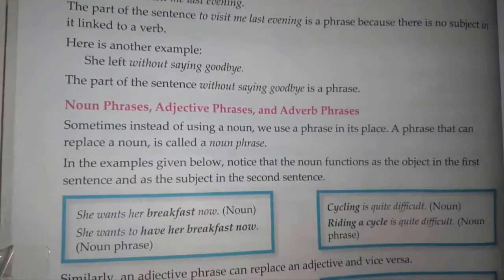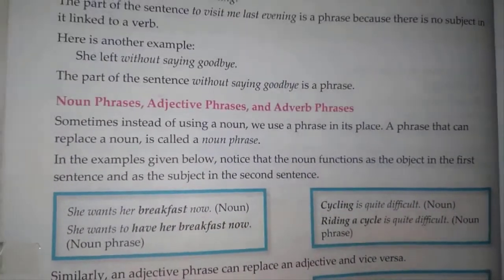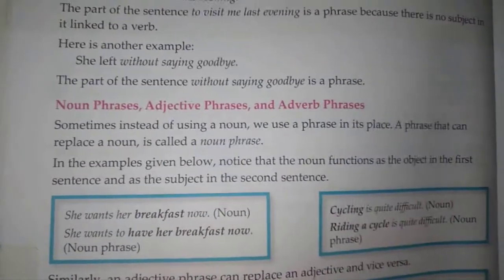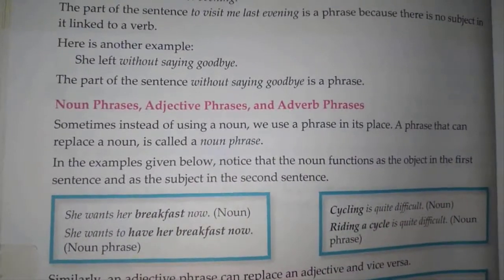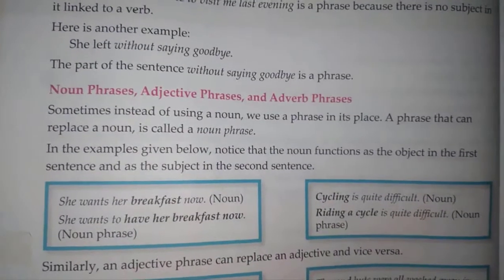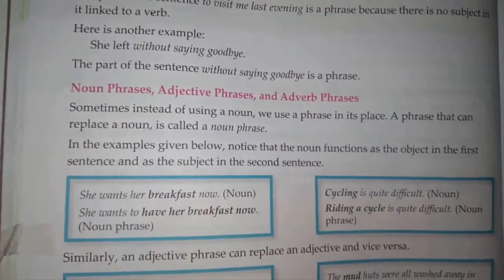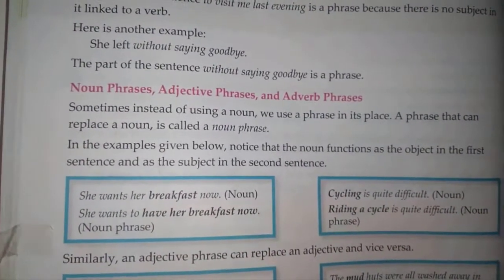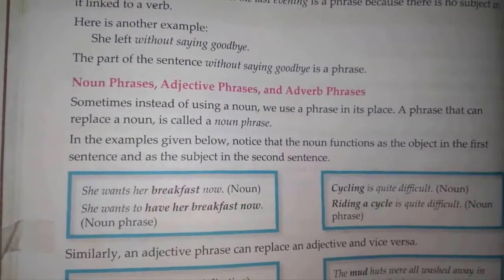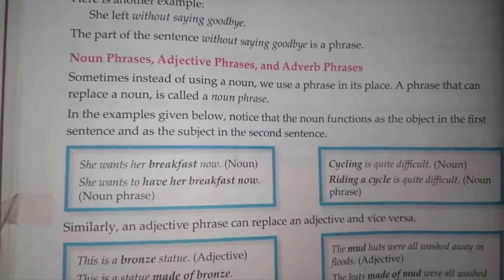Example: 'She wants her breakfast now.' And: 'Cycling is quite difficult.' — where 'riding a cycle' is the noun phrase replacing the noun. Both are examples of noun phrases.